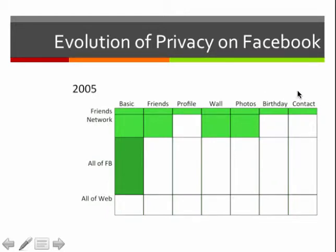Across the top on the x-axis, we have different pieces of information: basic profile information like your gender, your name, your photo, your list of friends, all of your profile, what's posted on your wall or your timeline, photos, your birthday, and your contact information. So in 2005, your friends could always see all of your information. Your network had access to your basic information, your friends list, your wall, and your photos.